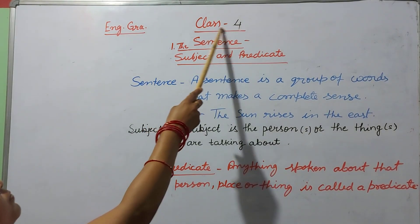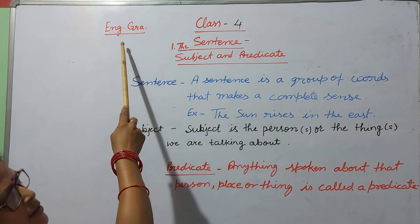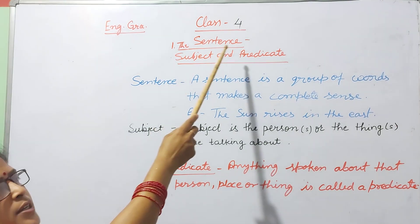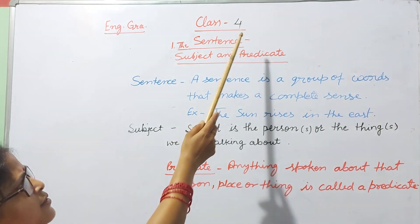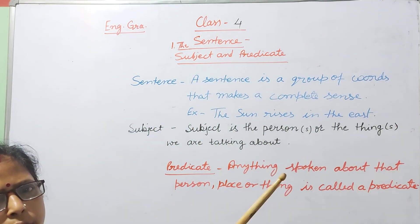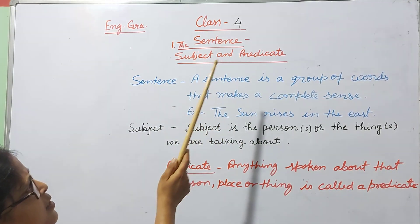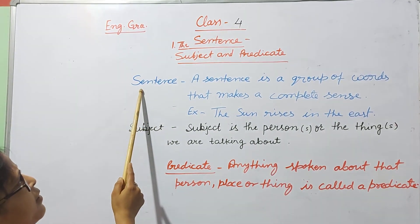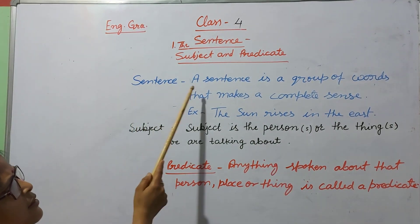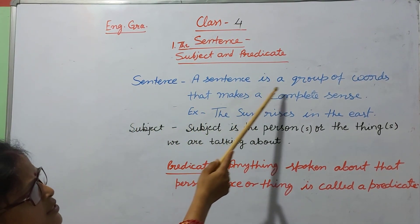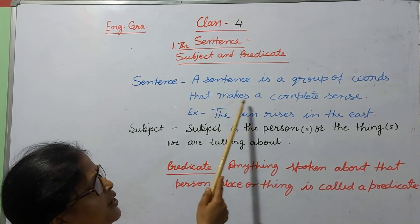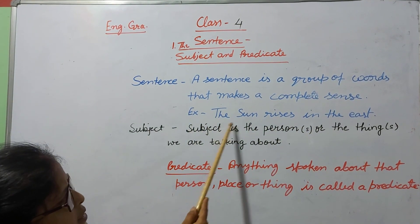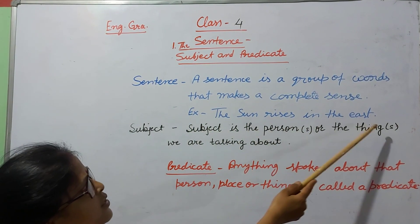Students of class 4, this is English grammar class and the first chapter is the sentence. You already know about the sentence, but the definition written here is: a sentence is a group of words that makes a complete sense. Example: the sun rises in the east.